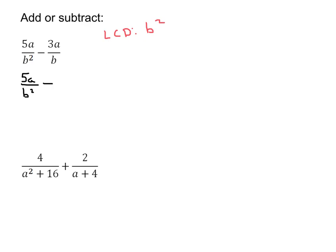What does this second fraction need? We want to make this b squared, so we're going to multiply the top and the bottom of these terms by b. So our second fraction is going to have 3ab on top, and on the bottom we're going to have b squared.